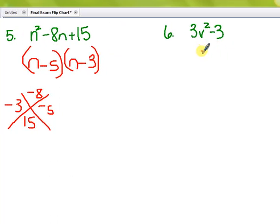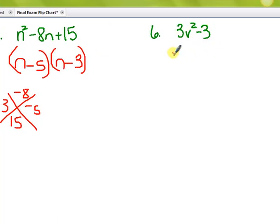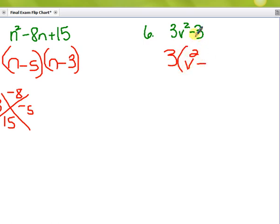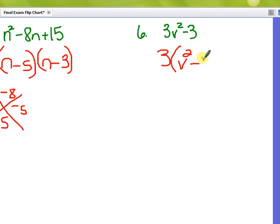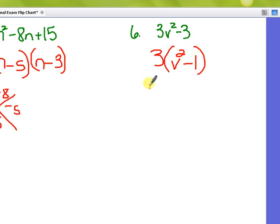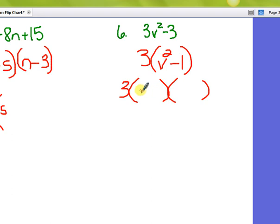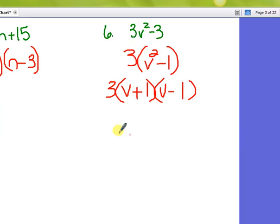Here's number 6. I see a GCF of 3 common to both. I'm going to divide it out. Common mistake is to leave that a 0. Don't do that. Upon inspection, I see perfect square, perfect square. You have to know this pattern: a plus b, a minus b. In this case, it's V plus 1, V minus 1. The order doesn't matter. This is completely factored.